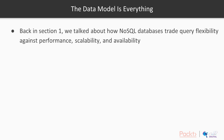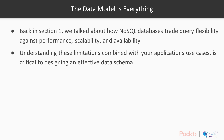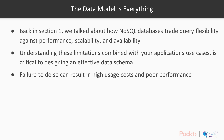The data model is everything. Remember back in Section 1 we talked about how NoSQL databases trade query flexibility against performance, scalability, and high availability. Understanding these limitations combined with your application's use case is absolutely critical to designing an effective data schema. Failure to do so can result in really high usage costs and poor performance. I've been working as an AWS architect for some time and this is the number one mistake that people make when using DynamoDB.